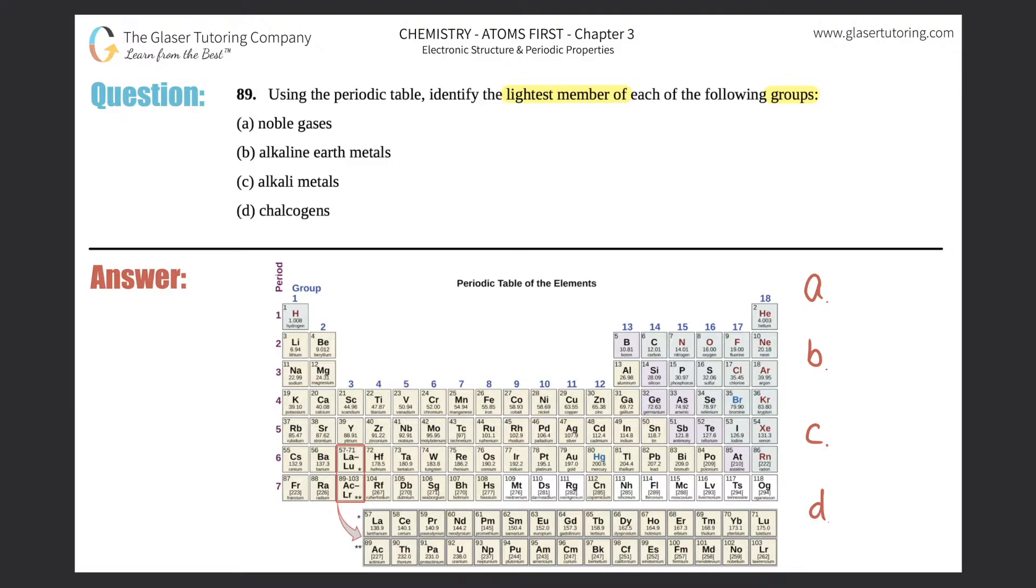Two things we need to know to answer this question: where these groups are on the periodic table, and what the question's asking for. They want to know what the lightest member of each group is. Lightest comes from mass, so they want you to find which one has the lowest mass.